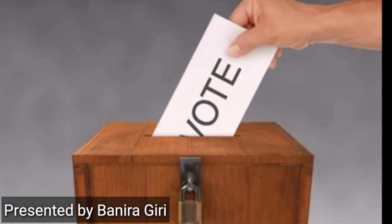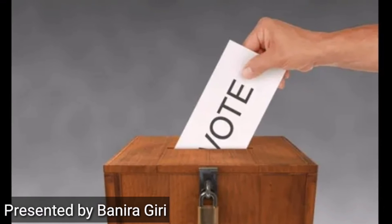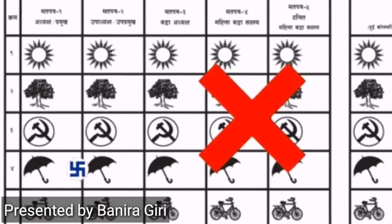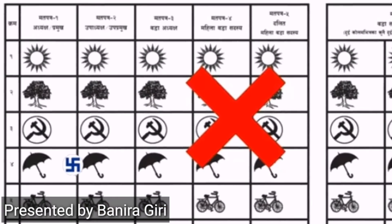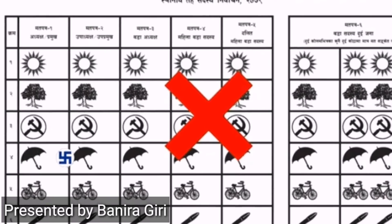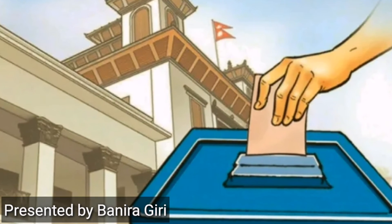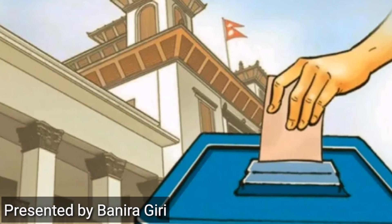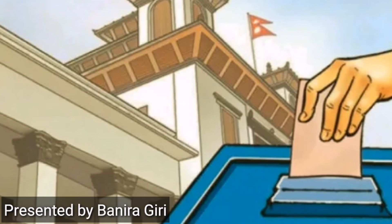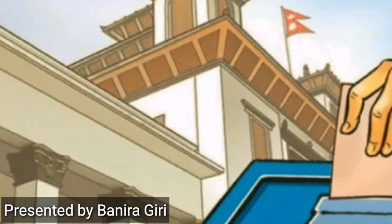While folding, fold the ballot properly so that the ink does not spread, and put the ballot into the ballot box. Then the vote will be eligible. If the ballot is not folded properly, the ink may spread and the vote will be rejected.